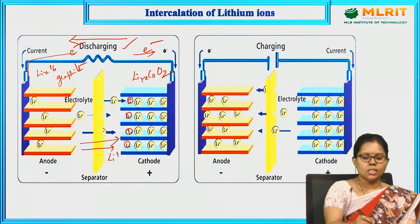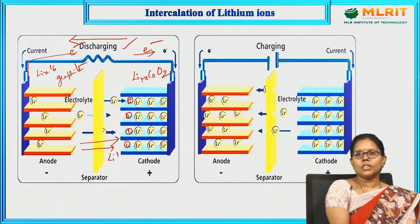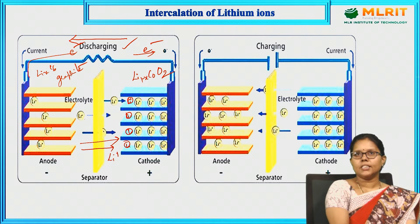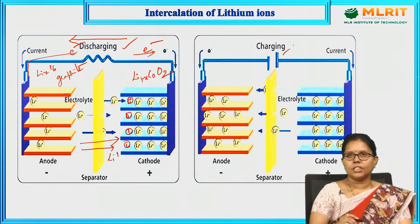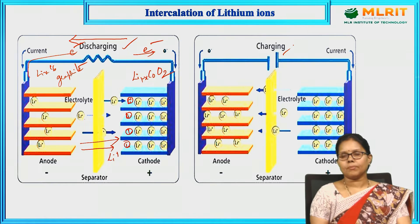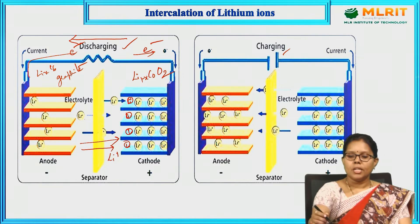The anode and cathode are separated by a separator made of ebonite. This is all about discharging. During charging, current moves from anode to cathode and electrons move from cathode to anode externally.